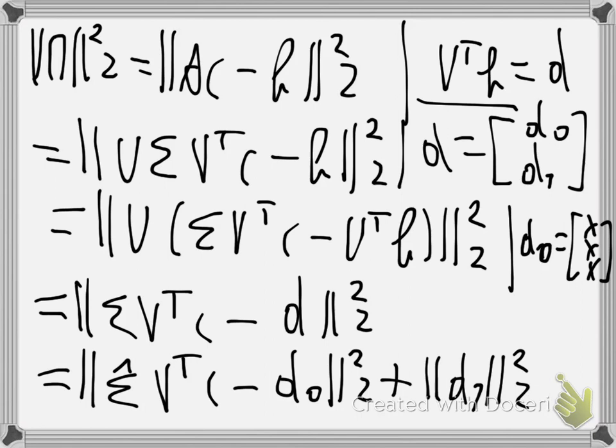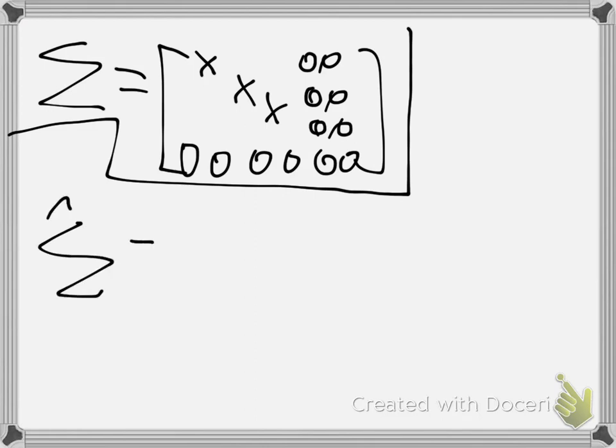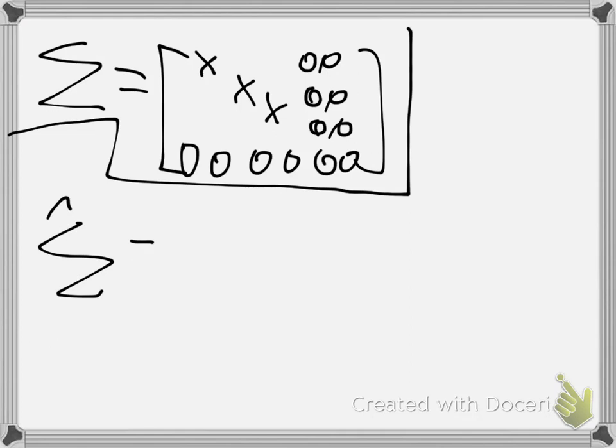Σ hat is when you have your matrix Σ with diagonal elements and rows and columns with only zeros. Σ hat is when you remove some of these rows or columns—you don't necessarily have to remove them all. The goal is that you can still multiply with the matrices V and U.